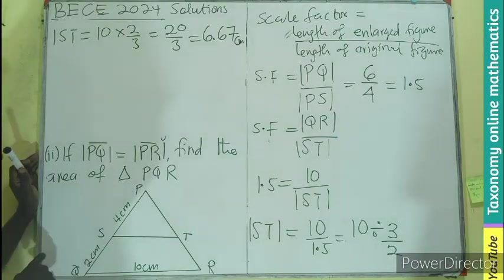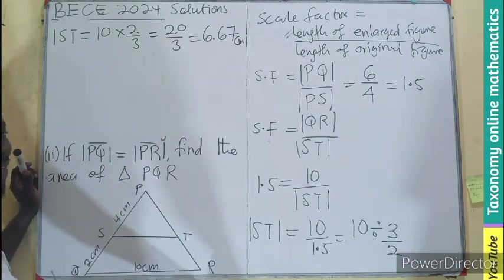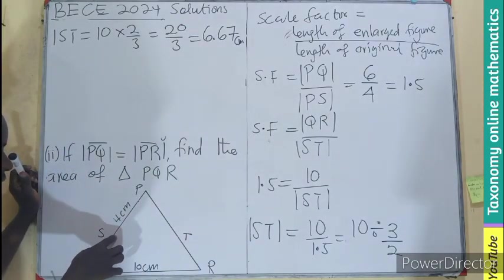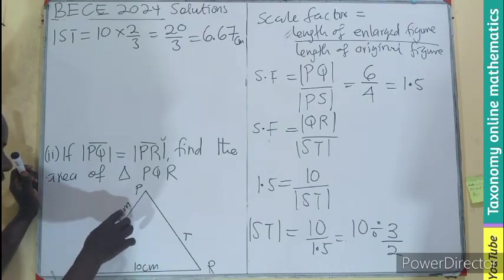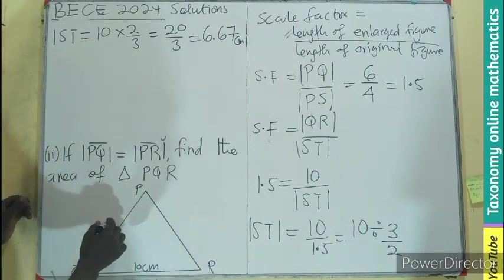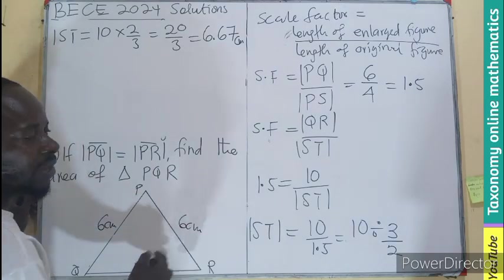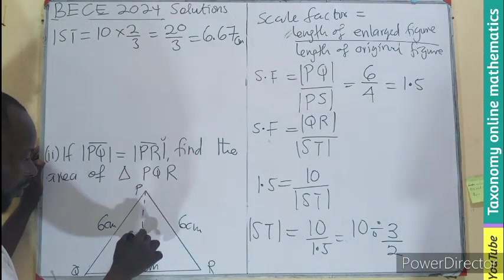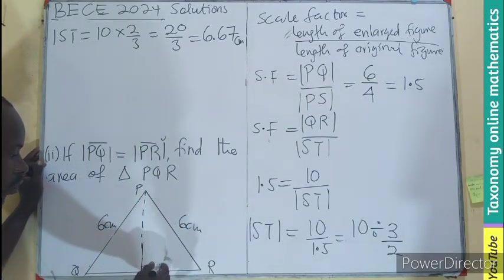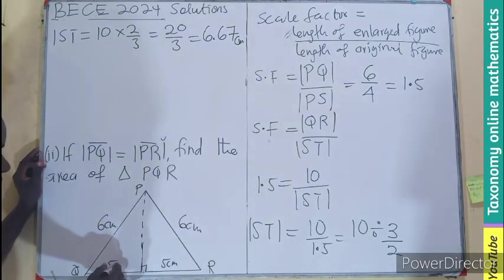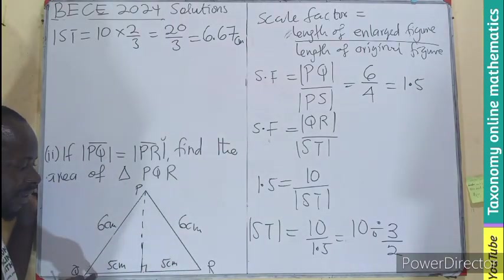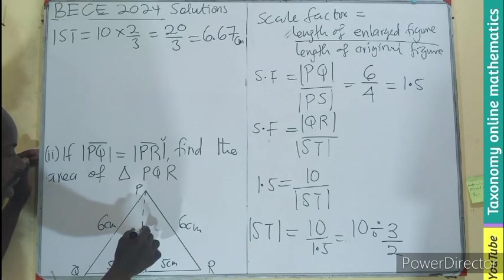Now for the second part, if PQ is the same as this, it's only telling us that this diagram, the triangle PQR, is going to be an isosceles triangle. So if it is an isosceles, then it means here will be 6 centimeter, here will be 6 centimeter. So if I draw a line, it will divide the 10 centimeter into 2. So here will be 5 centimeter, here will be 5 centimeter. How do we find area of a triangle?